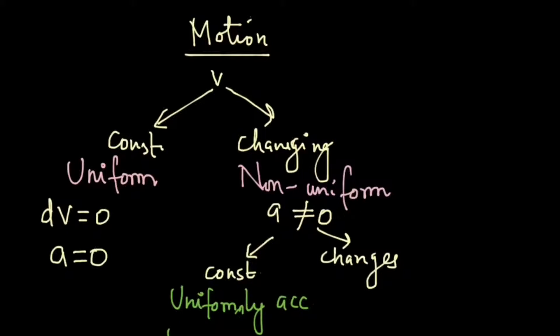When the acceleration changes we call it non-uniformly accelerated motion. For example, the circular motion falls into this category of non-uniformly accelerated motion, whereas the projectile motion or free fall fall into this category of uniformly accelerated motion.